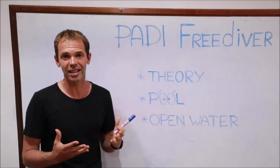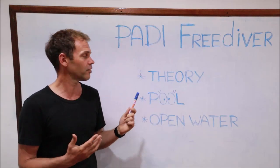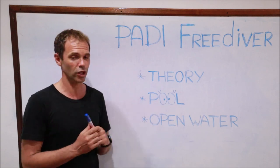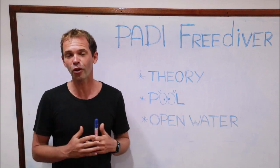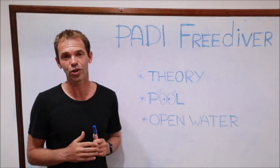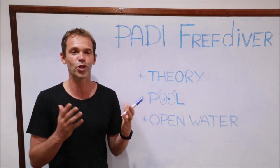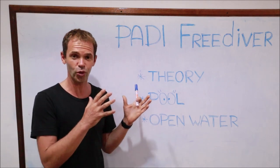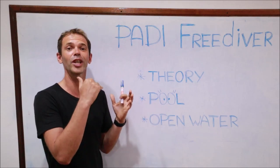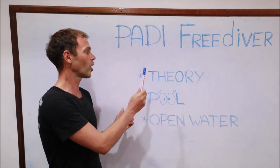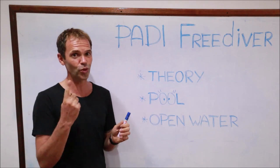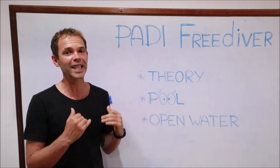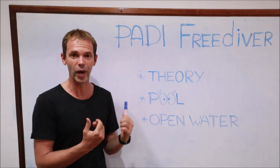Normally this first level has three parts: theory, swimming pool skills, and open water skills. When you are looking for a freediving course, no matter what country you're in, make sure the course you sign up for has all three parts — not two, not one, but all three of them.